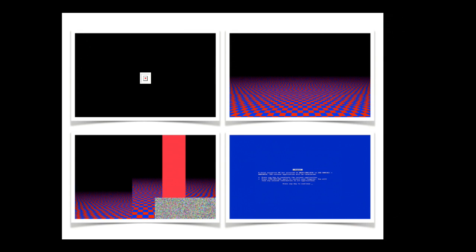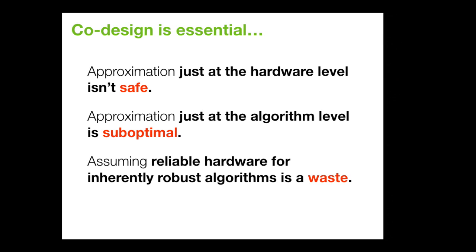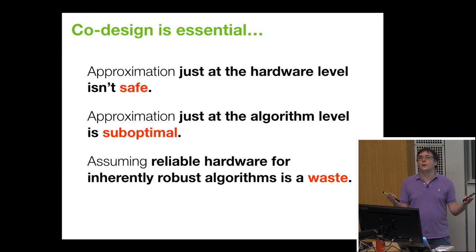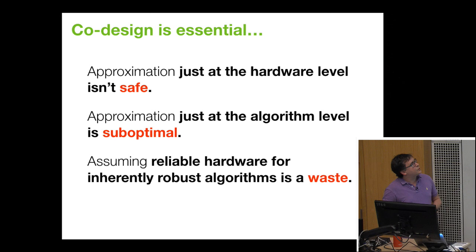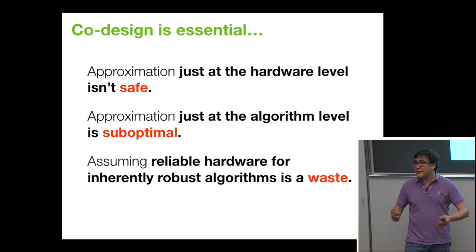But here's the catch — you have to do approximation very carefully. If you're not careful, instead of getting a slightly degraded image, you get a blue screen, no output, or corrupted output. The message is that it has to do with co-design. If you just do approximation at the hardware level without the software knowing, you'll likely cause a crash. Doing approximation only at the algorithm level — machine learning or floating point — is suboptimal. And assuming reliable hardware for inherently robust algorithms is just a big waste.